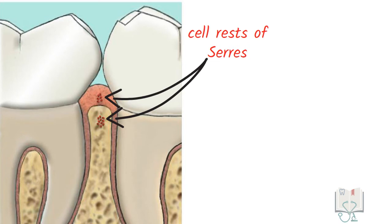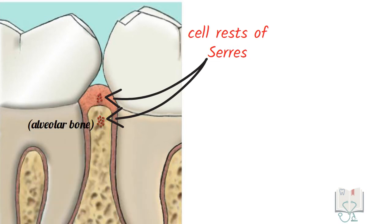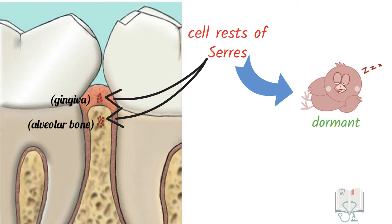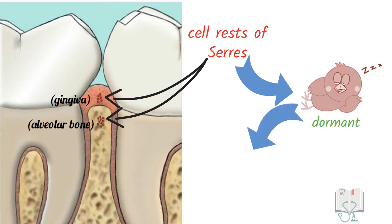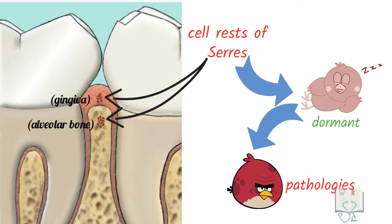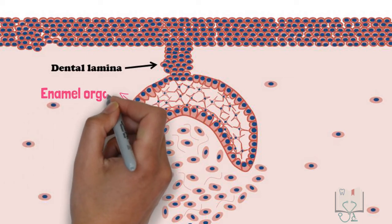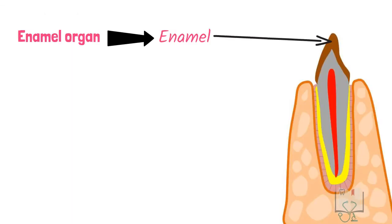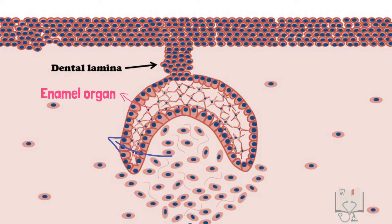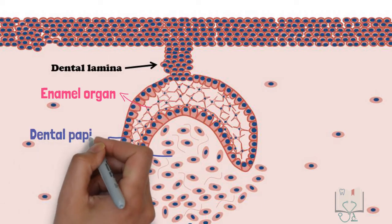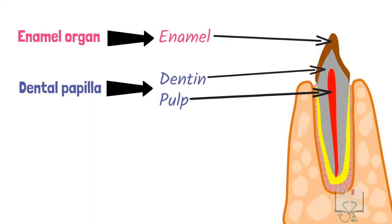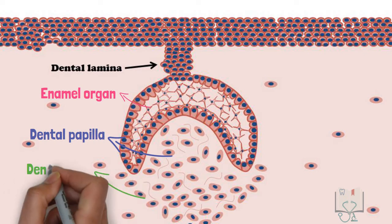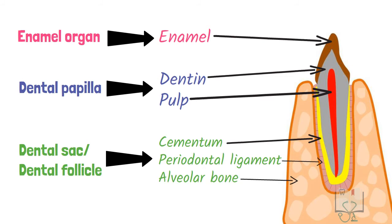This degeneration is not complete in all areas and may leave some remnants known as cell rests of Serre. These remnants of the dental lamina may be present in alveolar bone or gingiva. These rests are dormant and have no function, though they may lead to pathologies like tumours or cysts later in life. The placodes on the dental lamina called the enamel organ give rise to the enamel of the tooth. The ectomesenchyme just beneath the enamel organ is called the dental papilla, which gives rise to dentine and pulp. The ectomesenchyme around the enamel organ and dental papilla is called the dental sac or dental follicle, which gives rise to cementum, periodontal ligament, and alveolar bone.